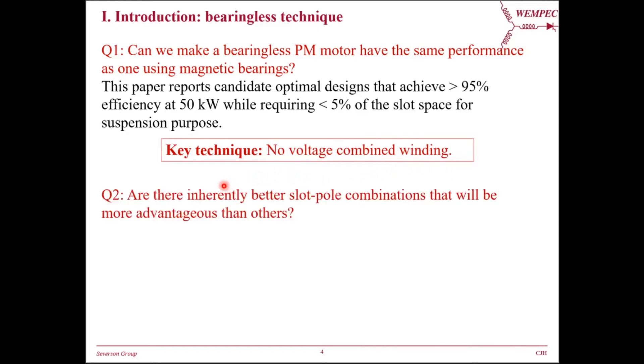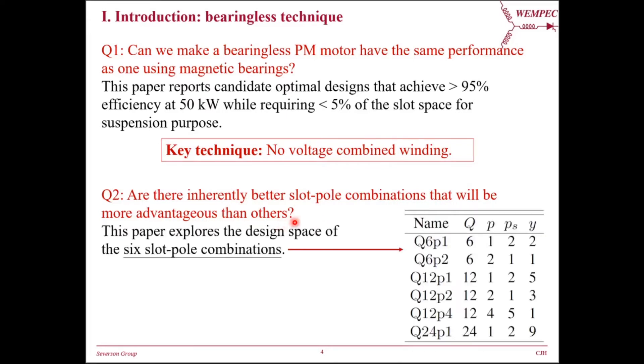Following the first question, a second question is: are there inherently better slot pole combinations that will be more advantageous than others? To answer this, we explore the design space of six slot pole combinations as listed in the table here. For each slot pole combination, a different no-voltage combined winding must be designed.